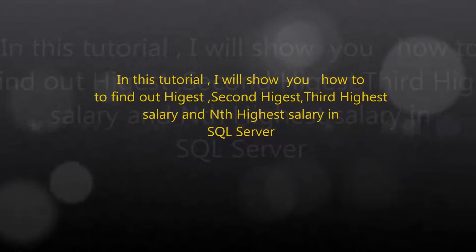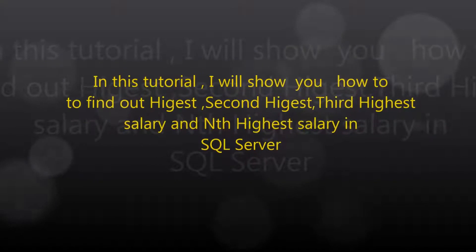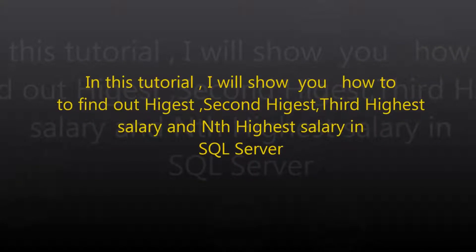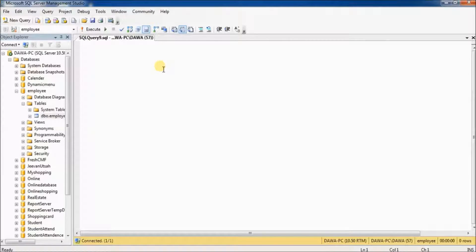In this tutorial, I'll show you how to find out the highest salary, second highest salary, third highest salary, and nth highest salary from a table in SQL Server. We already have one employee table, and now I'm going to show you the records in the employee table.